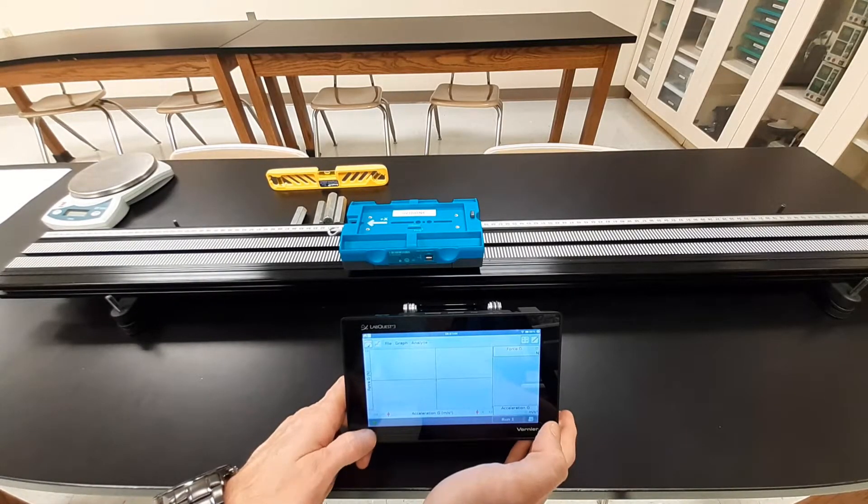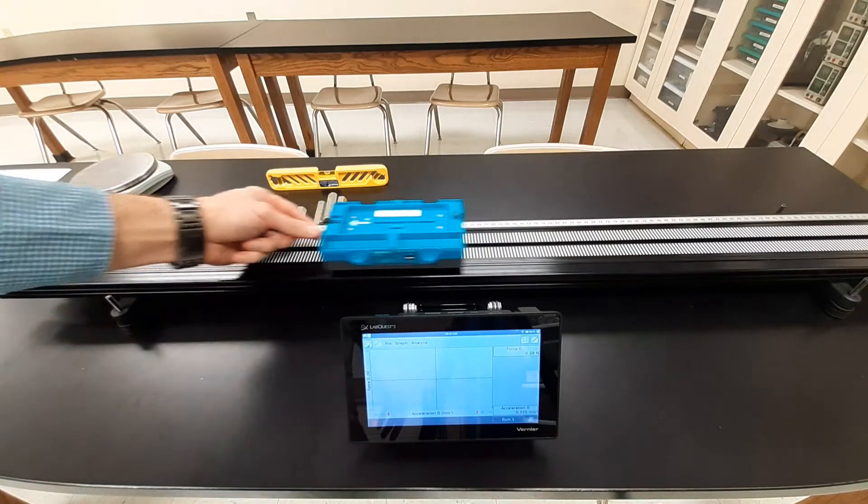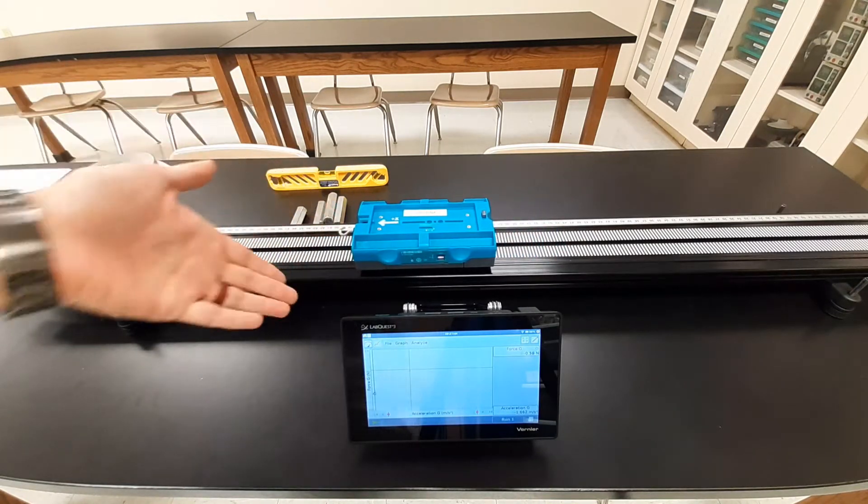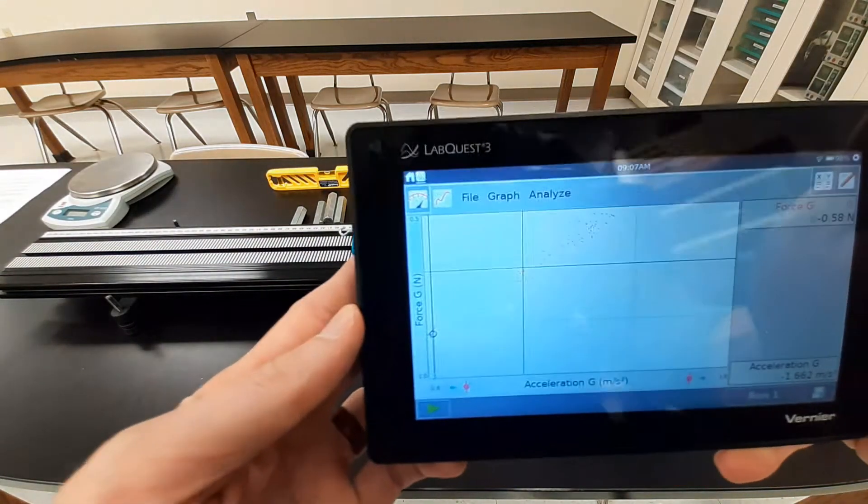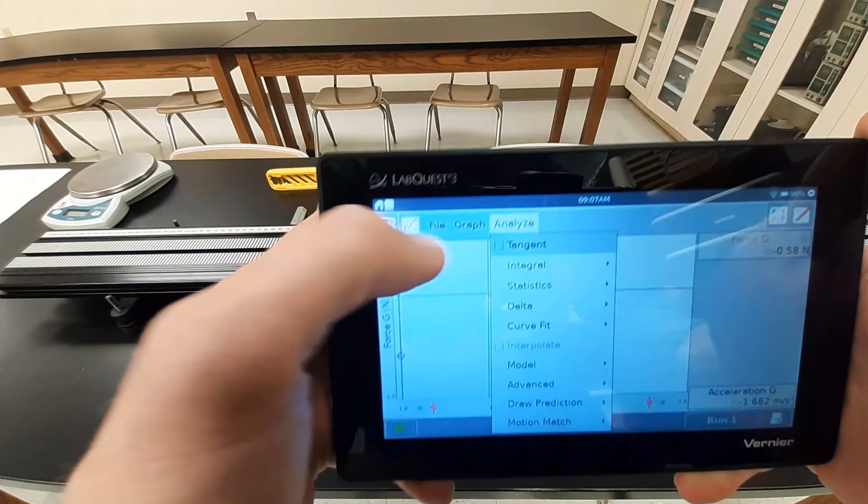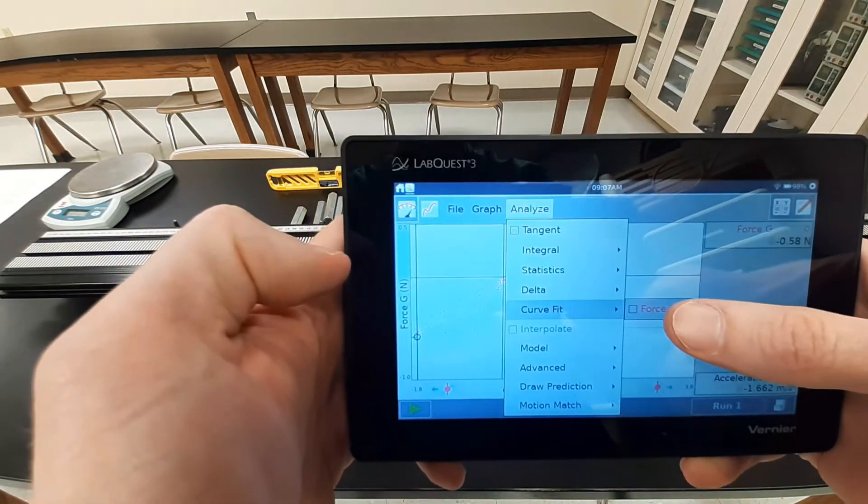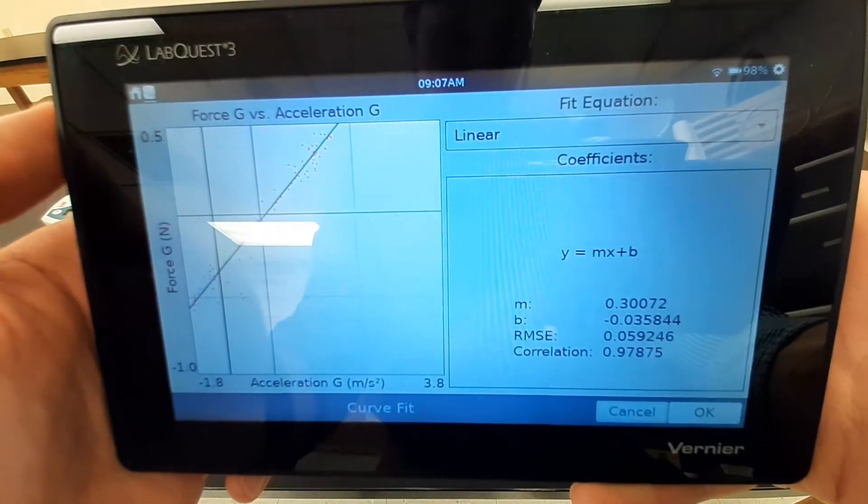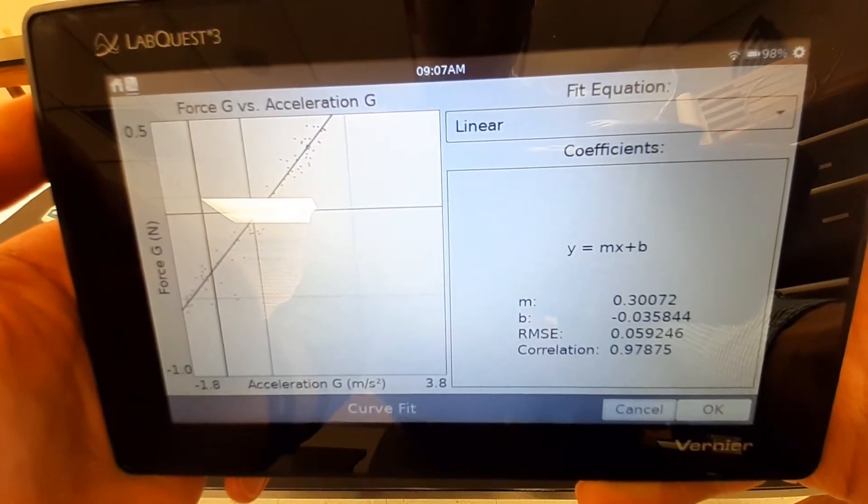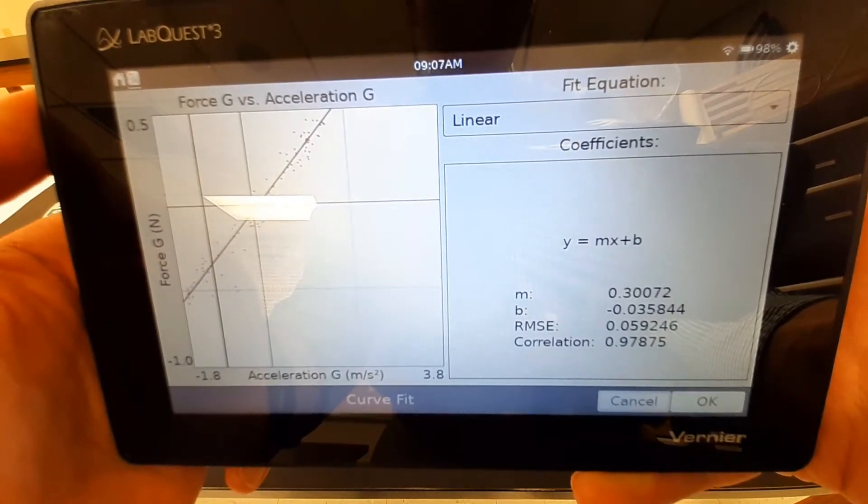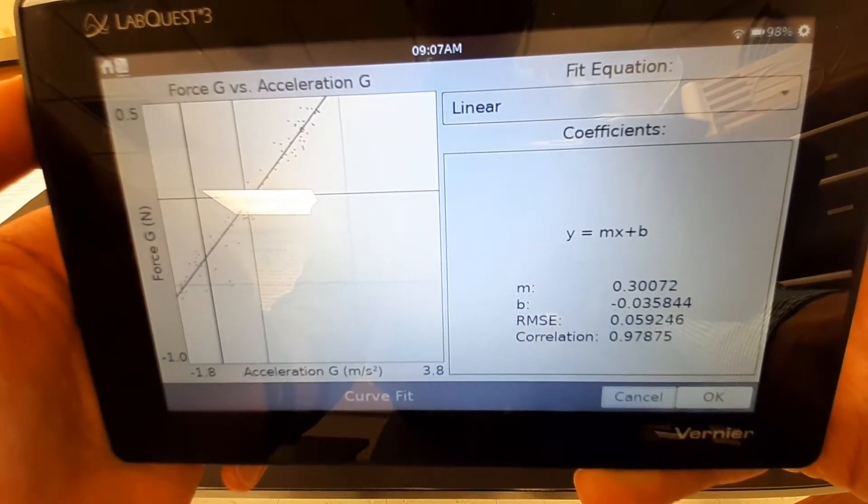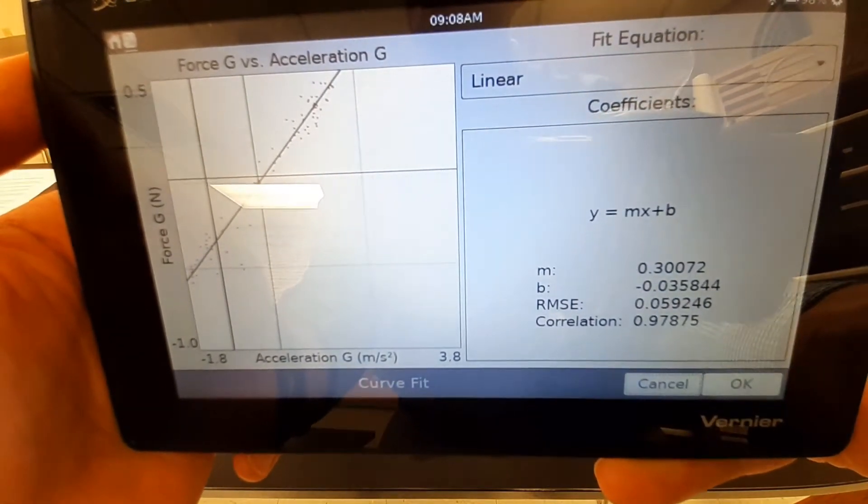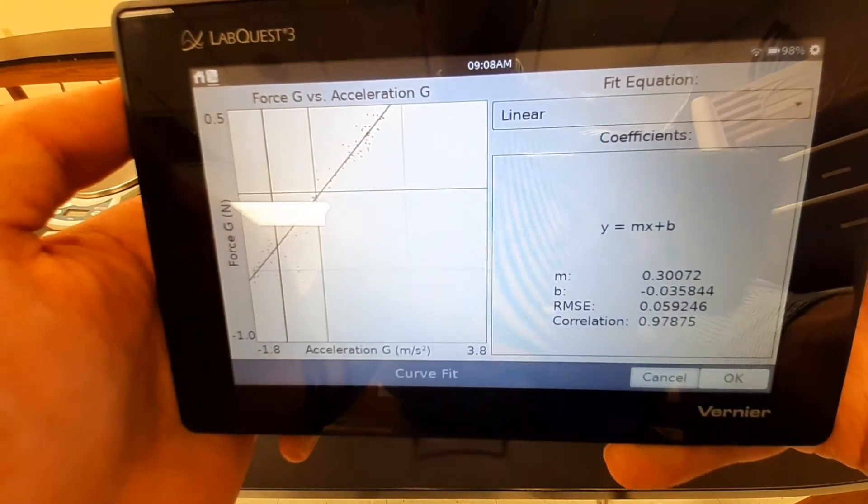So we're doing part one, trial two. I'm going to start my data collection. Begin by applying a force to my car. Data stops after five seconds. And we want to analyze this the same way we did trial number one. So I'm going to curve fit. And so now slightly different slope there for m, 0.337, and slightly different y-intercept, negative 0.0358. So record those two values. Part one, trial number two.